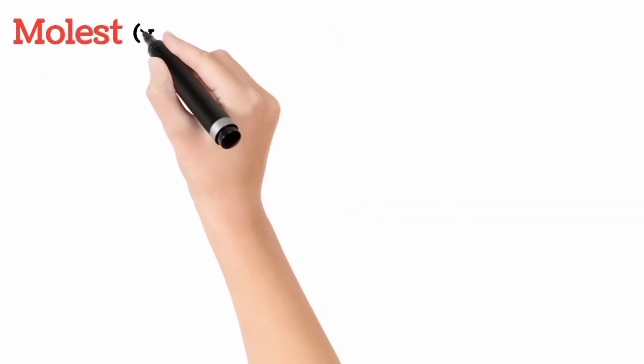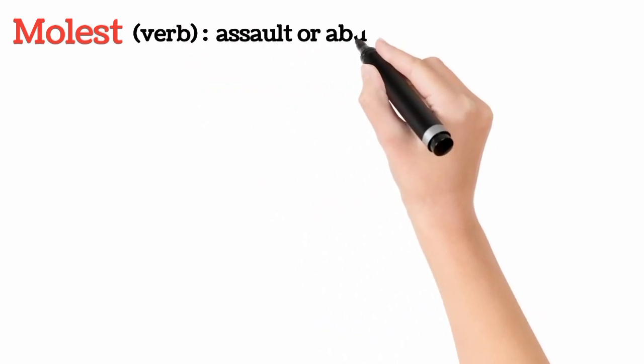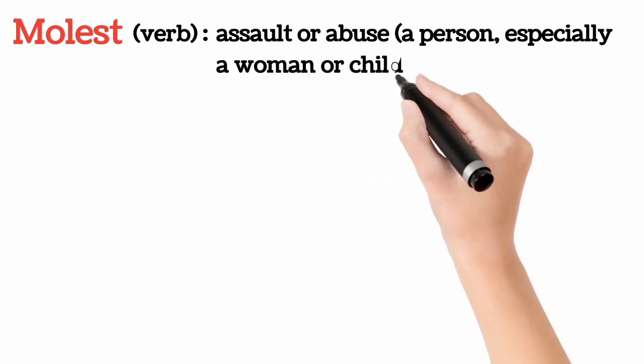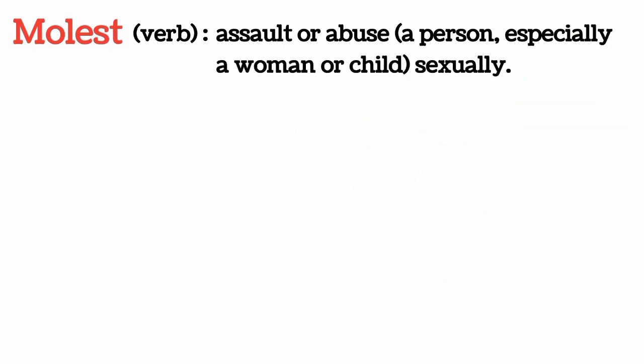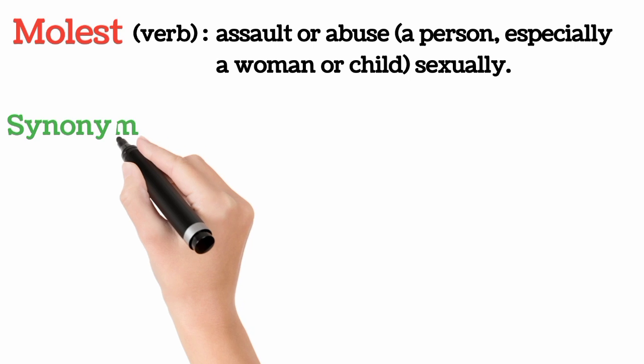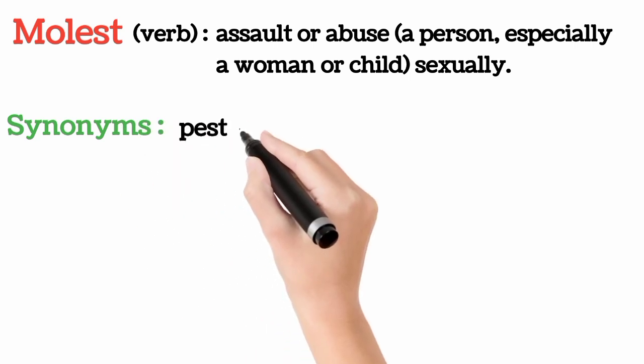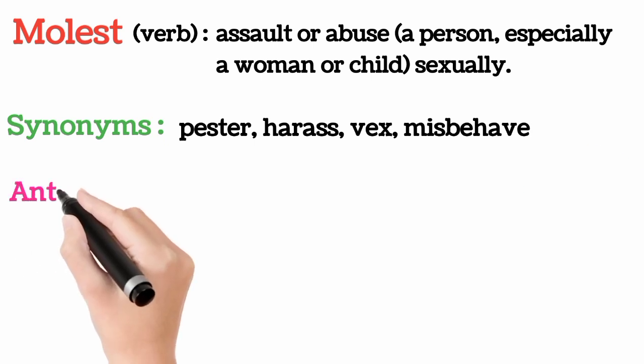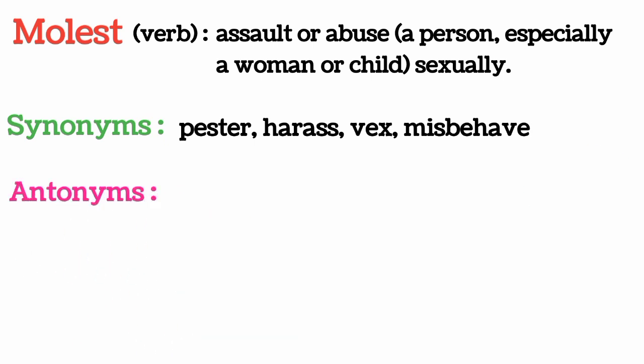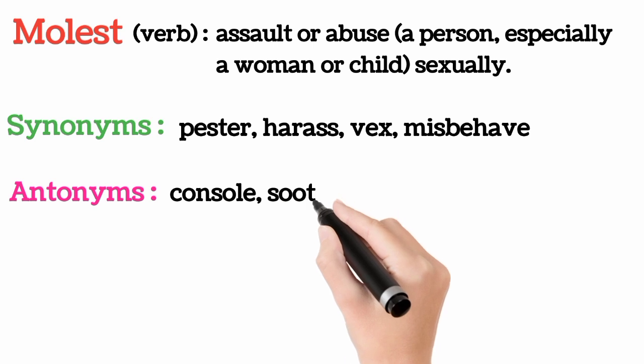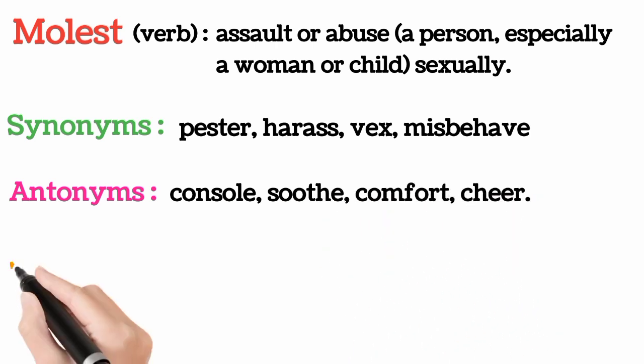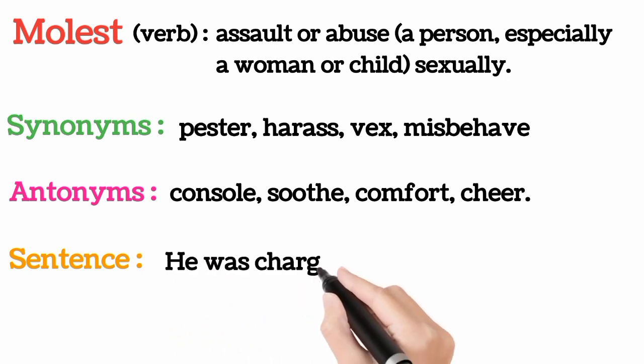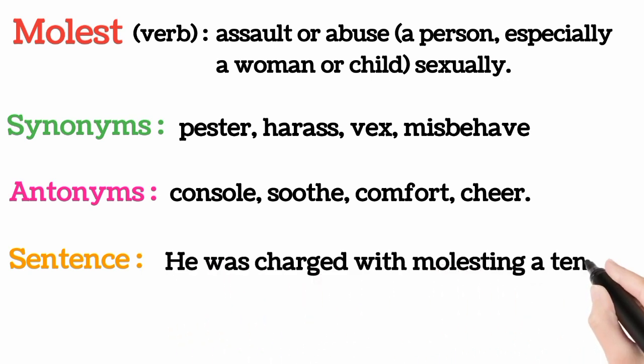Molest, it's a verb, which means assault or abuse a person, especially a woman or child sexually. Synonyms: pester, harass, vex, misbehave. Antonyms: console, soothe, comfort, cheer. He was charged with molesting a 10-year-old girl.